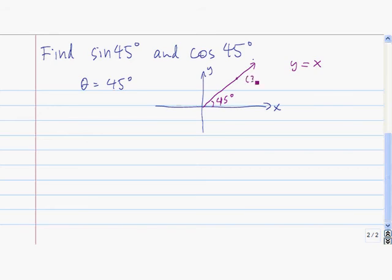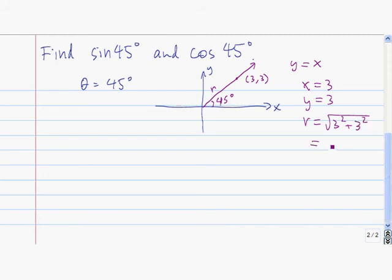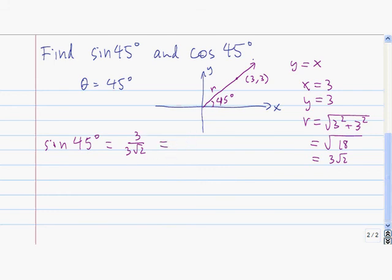Let's use the point (3, 3). Using this point, we have to find r. At the point (3, 3), x is 3, y is 3, and r equals the square root of x squared plus y squared, which is the square root of 9 plus 9, equals the square root of 18, which is 3 times the square root of 2. So sine of 45 degrees equals the y-coordinate divided by r, which is 3 divided by 3 root 2. The 3's cancel, leaving us with 1 divided by the square root of 2.